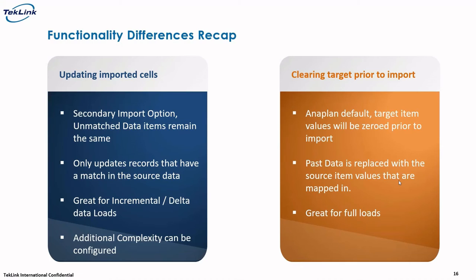Let's recap and go through the differences of these two options at a high level. For updating imported cells: this is the secondary import option where unmatched data items remain exactly the same. We only update records that have a match in the source data, making it great for incremental or delta loads, and additional complexity can be configured according to business need. As for clearing the target prior to import: this is the Anaplan default, target item values are zeroed out prior to import, past data is replaced with source item values that are mapped in, making this excellent for full loads.